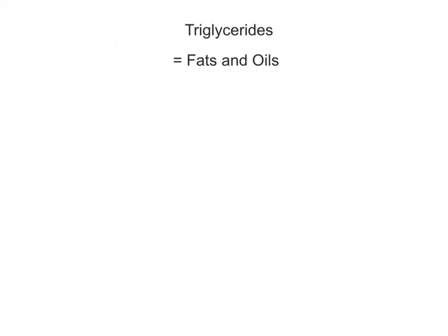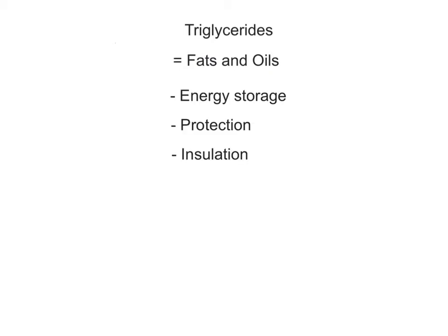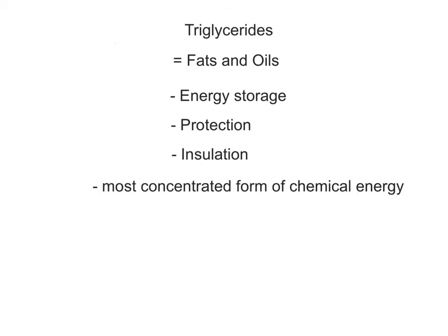The most abundant lipids in the human body and diet are the triglycerides, also known as the fats and oils. They function in energy storage, protection, and insulation. Triglycerides are the body's most concentrated form of chemical energy, providing more than twice the energy per gram as compared to carbohydrates and proteins. When we consume too many carbohydrates, fats, oils, and proteins in our diets, they are all stored as triglycerides in adipose tissue.